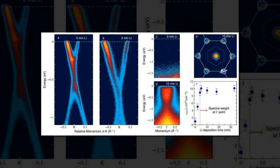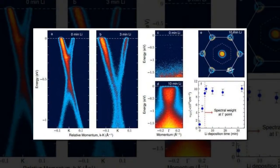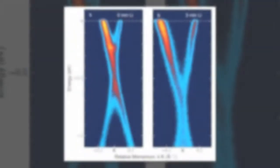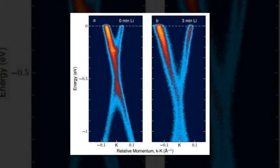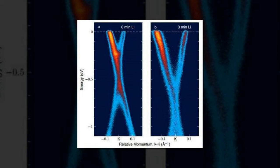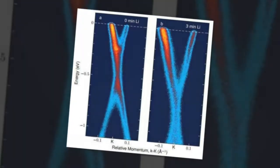A team of researchers from Germany and Canada has found a way to make graphene superconductive by doping it with lithium atoms. In their paper they uploaded to the preprint server arXiv, the team describes the process they used and the results they obtained when testing it.